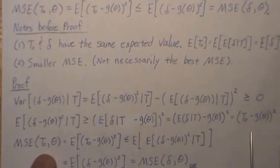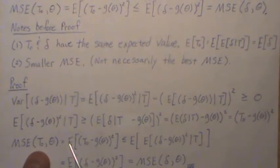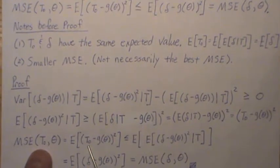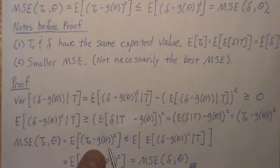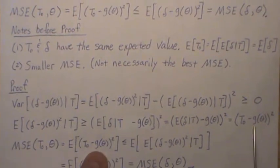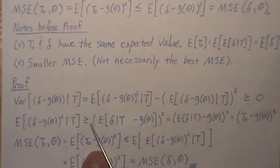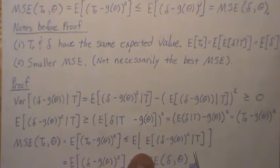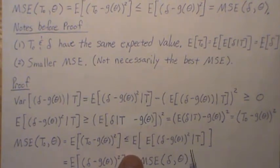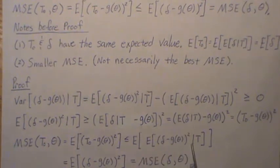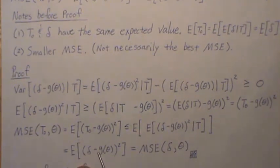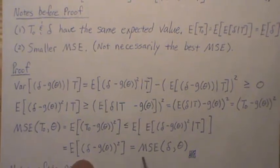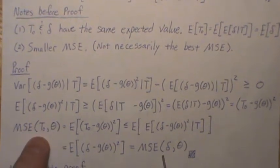The mean squared error of our new estimate t0 is the expected value of (t0 minus g(theta)) squared, averaged over all possible values. We've taken the expected value of one expression, which is always less than or equal to the expected value of another expression. But by the law of total expectation, the expected value of a conditional expectation is just the same as the unconditional expectation, which is the mean squared error for delta — our original estimator minus what we're trying to estimate, squared.